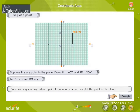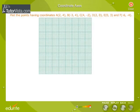Click the button to view an example. Plot the points having coordinates A(2, 4), B(-3, 4), C(4, -2), D(2, 0), E(0, 3), and F(-6, -4).